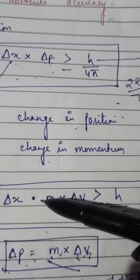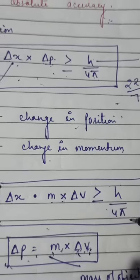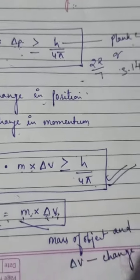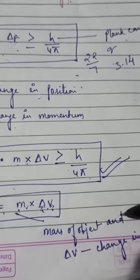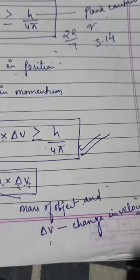So we can write Δx × m × Δv ≥ h/4π. So this is also Heisenberg Uncertainty Principle, where m is the mass of the object or mass of that body and Δv is change in velocity.